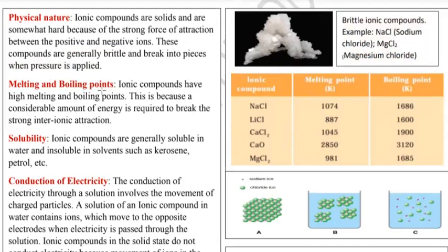Then there are melting and boiling points. Ionic compounds have high melting and boiling points. This is because a considerable amount of energy is required to break the strong inter-ionic attraction. The positive and negative ions are very strongly attracted to each other, so breaking that inter-ionic attraction needs a considerable amount of energy. That's why they have high melting and boiling points.